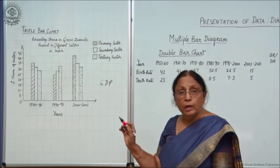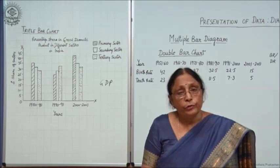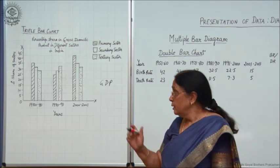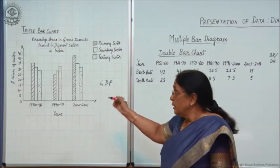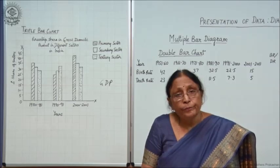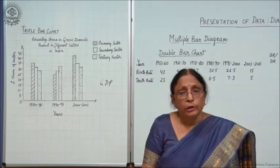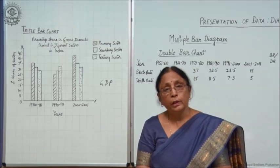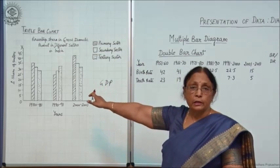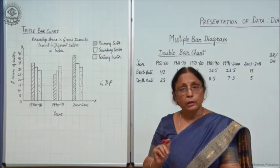Remember one thing when making double or triple bar charts: whatever symbol you use for a particular variable, in every other set the same symbol must be used. If you take primary first, then secondary, then tertiary, follow the same pattern in every set. For primary use one symbol throughout all sets, for secondary one symbol, and for tertiary one symbol. You may also use colours — three different colours — but maintain the same shade for each variable consistently.